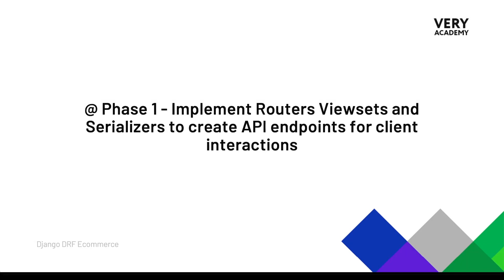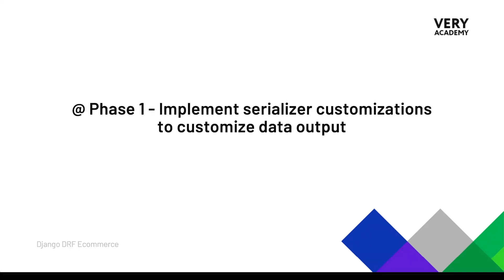We're going to learn how to implement routers, viewsets, and serializers to create these API endpoints for client interactions. I've tried to add some complexity by creating custom fields and thinking about deeper customizations that you might want to make in an actual application. In addition to that, we will implement serializer customizations to customize data output — these are very common activities you'll perform to shape the data returned to the front-end client.